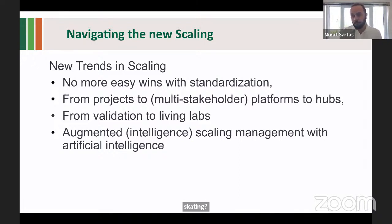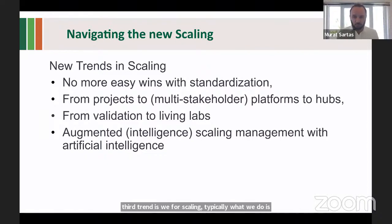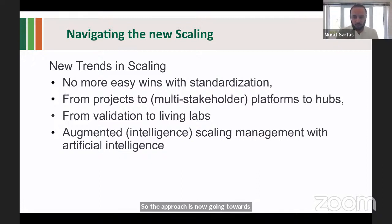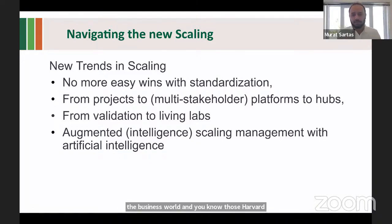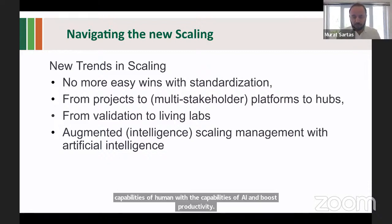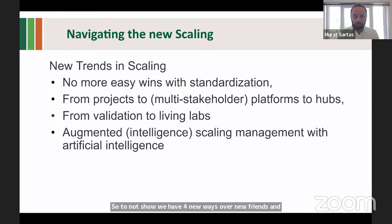The third trend: typically what we do is validate and show that something works. But that's not sufficient for scaling. The approach is now moving towards what's called living labs — experimental spaces where different stakeholders of digital solutions interact and co-design in structured processes. The fourth trend is AI — augmented intelligence. In the business world, the key concept is how to match the capabilities of humans with the capabilities of AI to boost productivity. We have four new trends in scaling, and we need to change the way we do scaling.